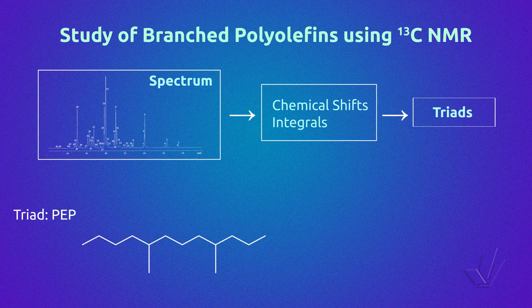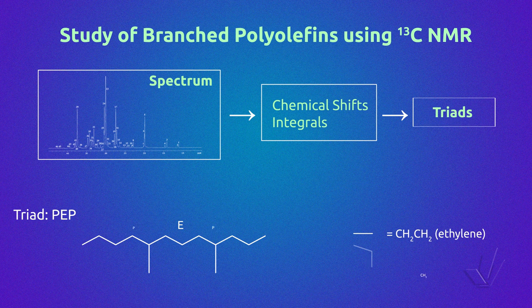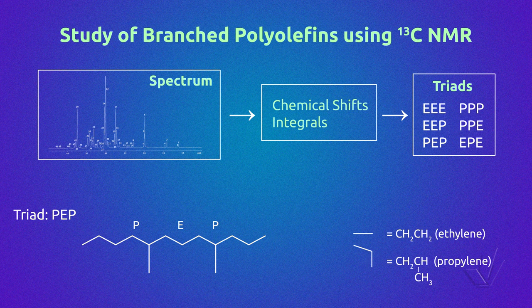For example, in an ethylene-propylene copolymer, where the ethylene unit is represented by E and the propylene unit by P, there exist six possible triads, or six combinations of three units. There are three triads centered in E and three triads centered in P. In the example shown here, we can see a triad PEP of an ethylene-propylene copolymer. The triad sequence can also give us information about how many units of a copolymer are between the units of the other copolymer.